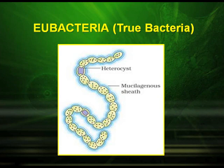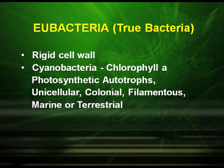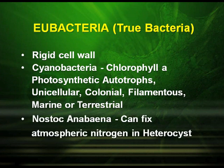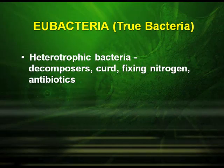Eubacteria are the true bacteria. They have a rigid cell wall. Cyanobacteria, Nostoc, and Anabaena are all included under this. Cyanobacteria has chlorophyll A. They are photosynthetic autotrophs, unicellular, colonial, filamentous, marine or terrestrial. Nostoc and Anabaena can fix atmospheric nitrogen in specialized cells called heterocysts. They have a mucilage sheath around their colony as well.